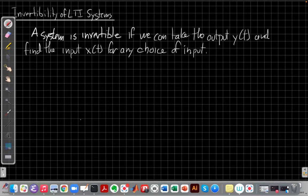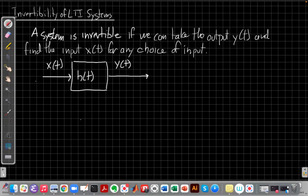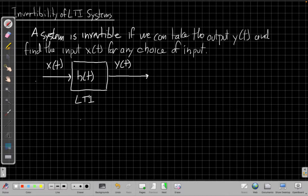So if we have an LTI system, we're going to put x(t) into it using the impulse response h(t) to get y(t), right? So we'll have this LTI system. And so, to find the inverse, we need another system